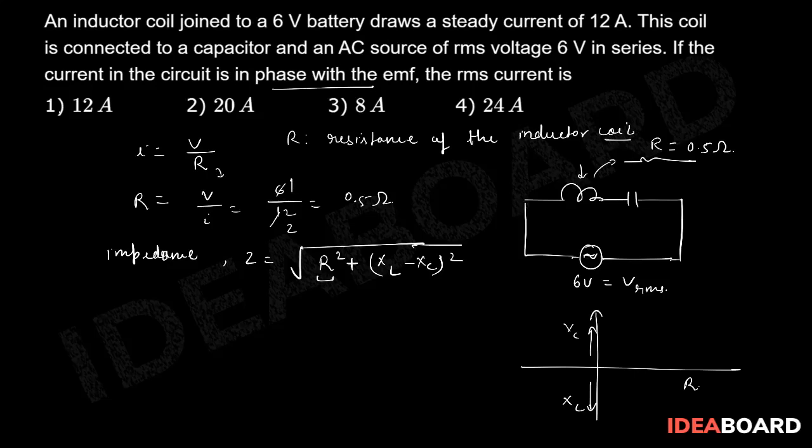If that is the scenario then XL is dominant. But here what they are saying is that current is in the same phase as the voltage. Suppose if we represent voltage on this axis, then current will also be on the same phase. That means they are saying that XL is equal to XC.